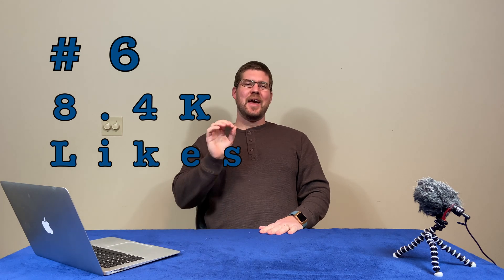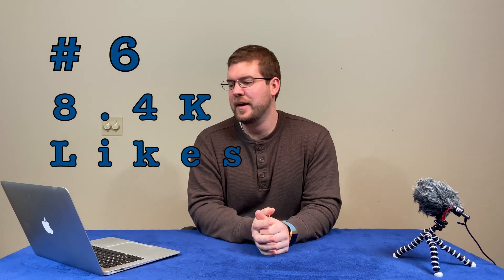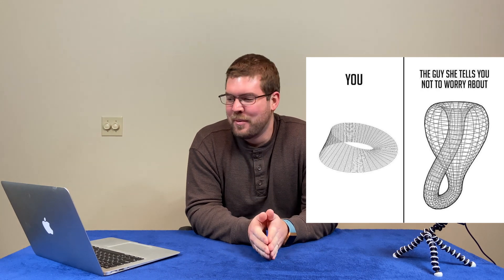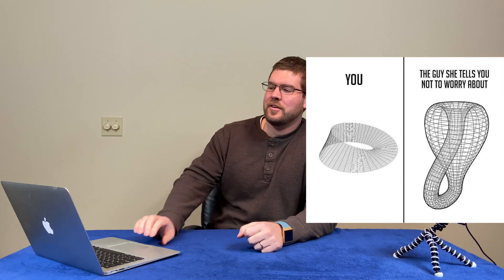Number 6, with 8.4 thousand likes. This one takes a little extra knowledge there, but we have the Möbius strip and the Klein bottle. Gotta watch out for those Klein bottles, they'll steal your girl.